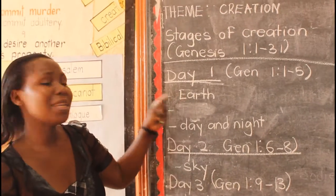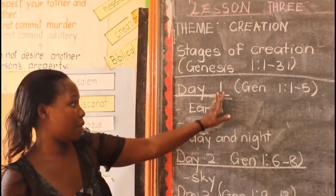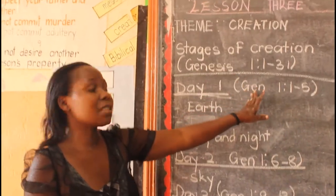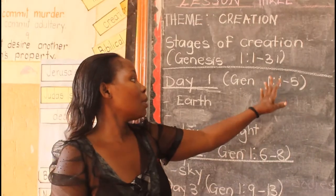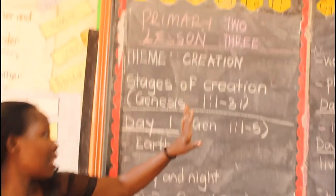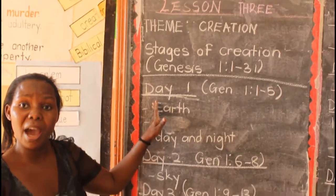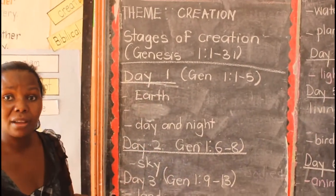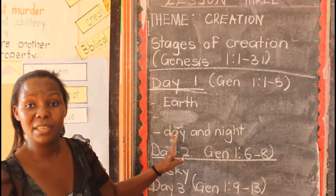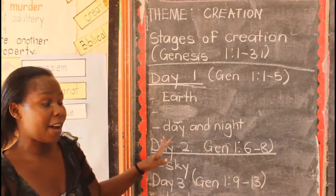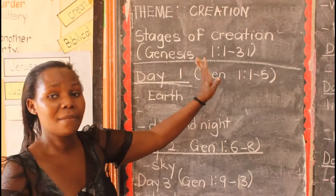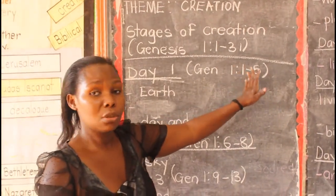The first day — on the first day, what did God create? If you want to know, go to Genesis chapter 1, from verse 1 to verse 5. On the first day, God created the earth — the earth where we are. God created the earth first. From that earth, God created day and night. That was the first day.